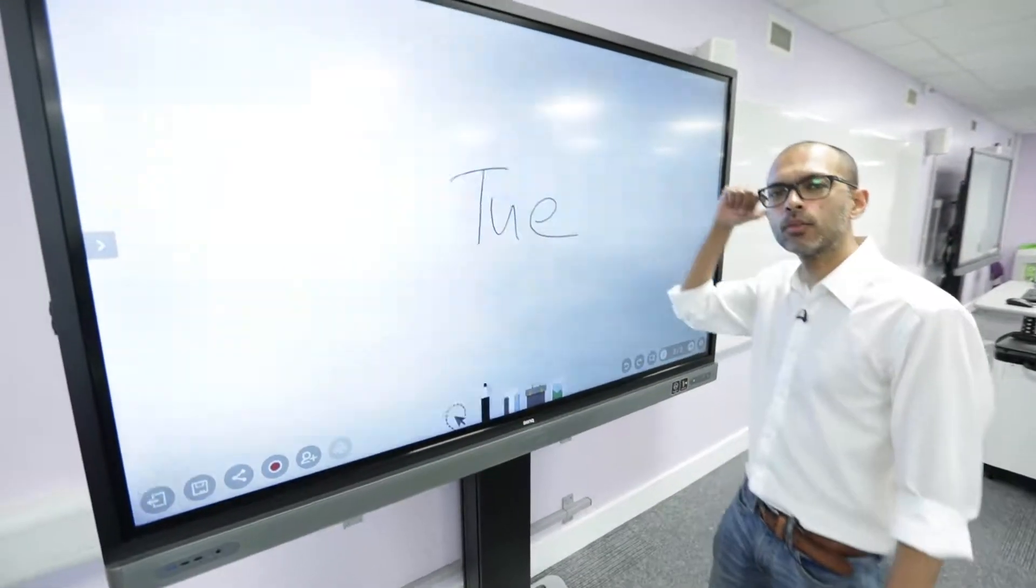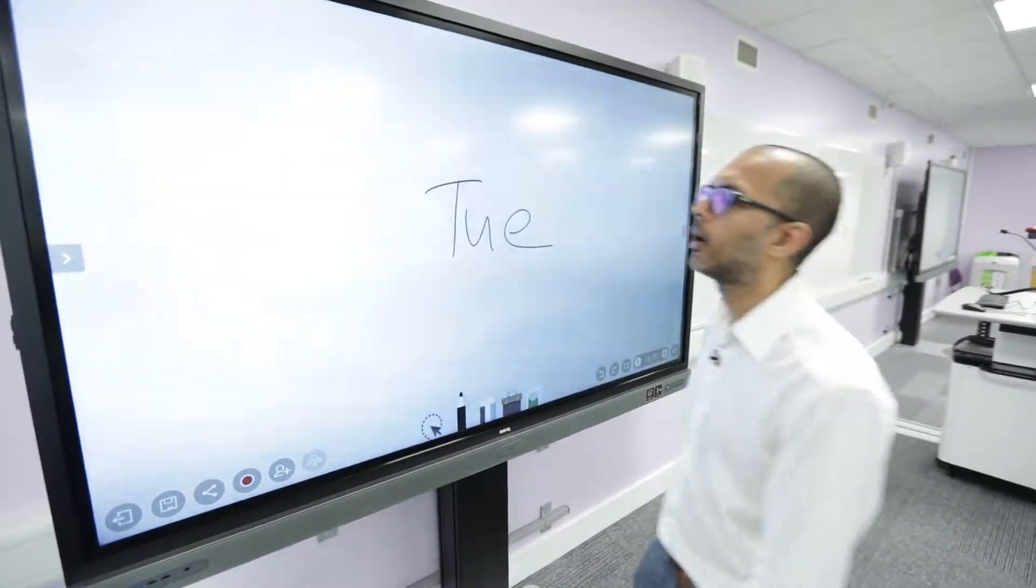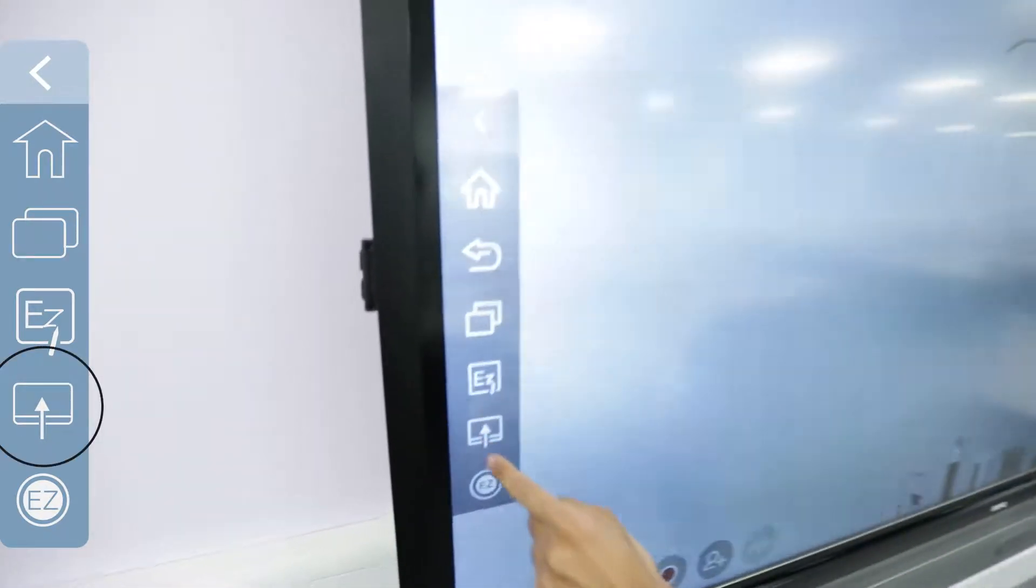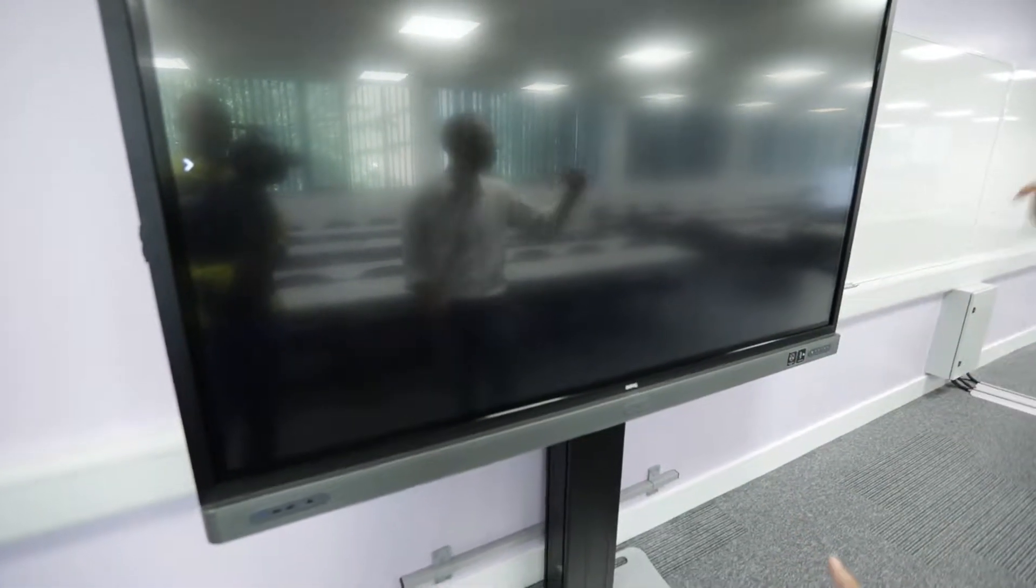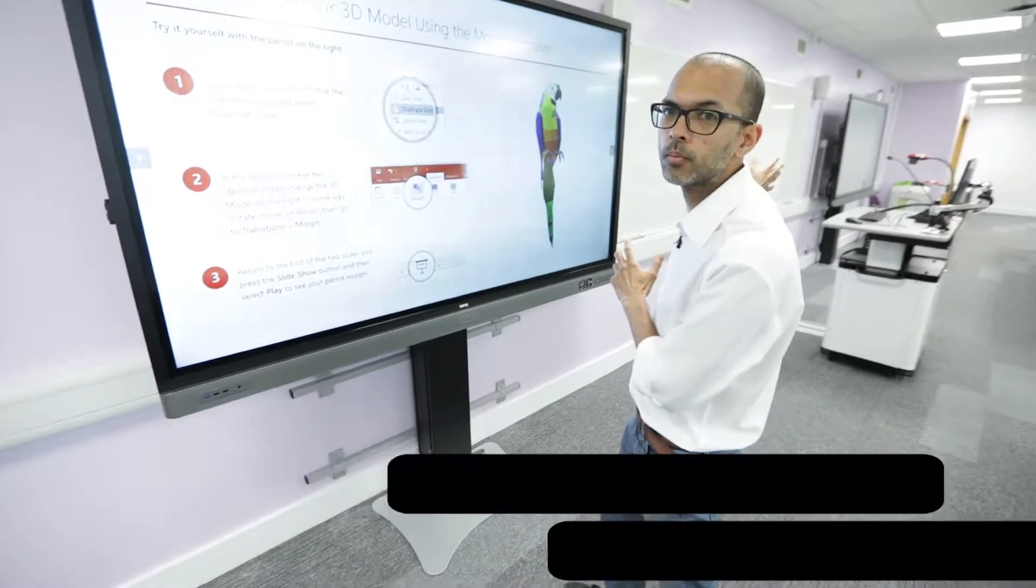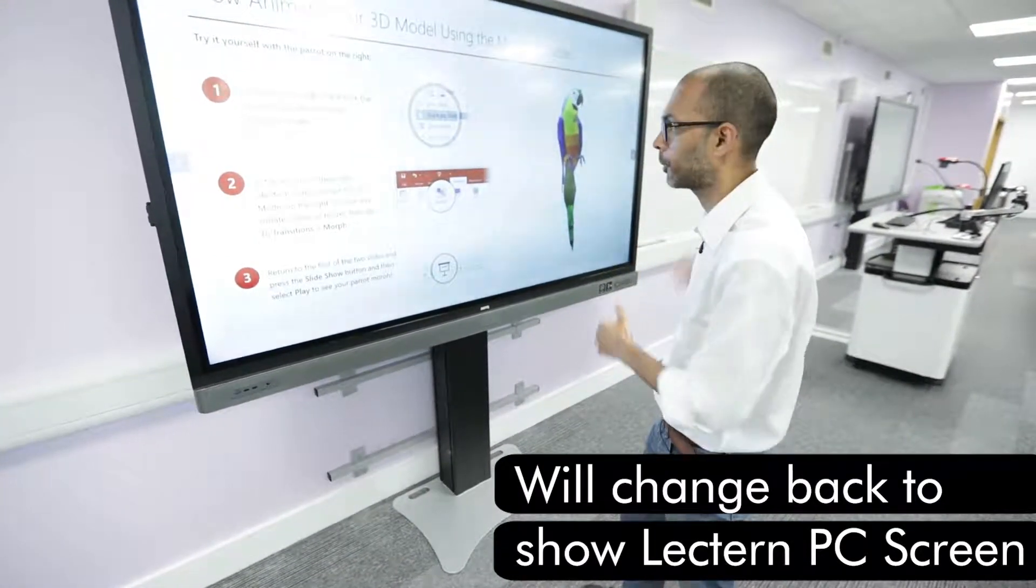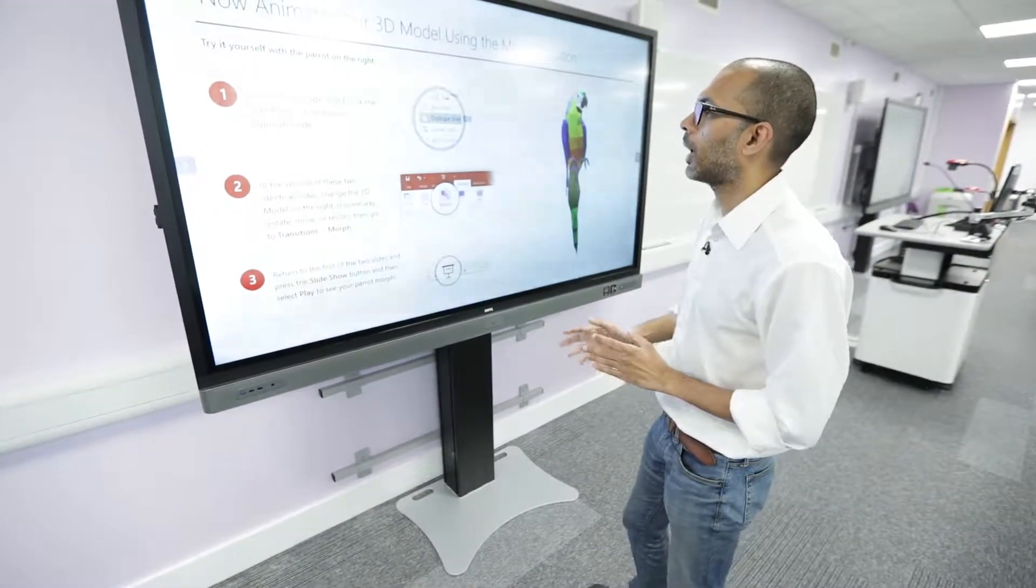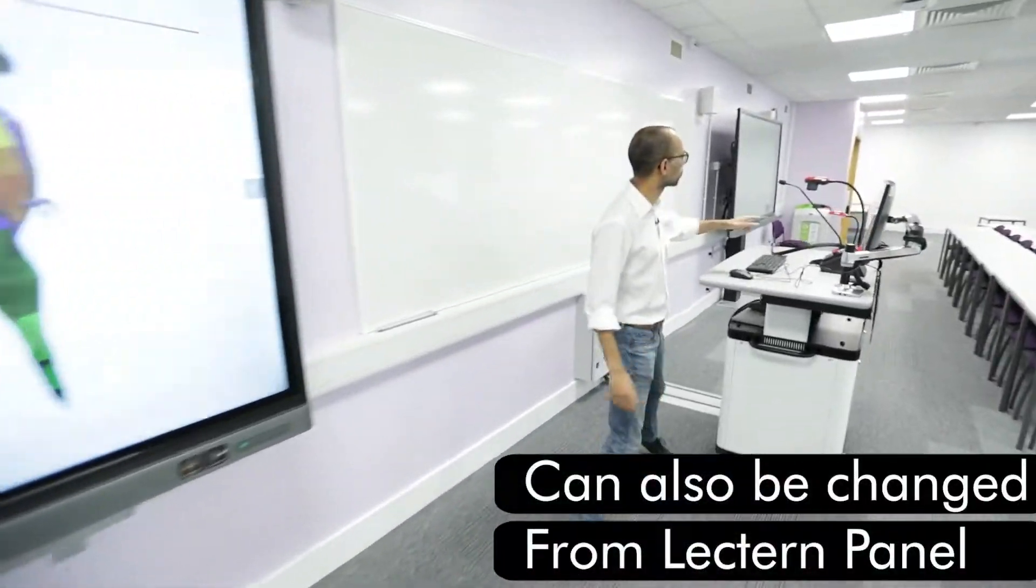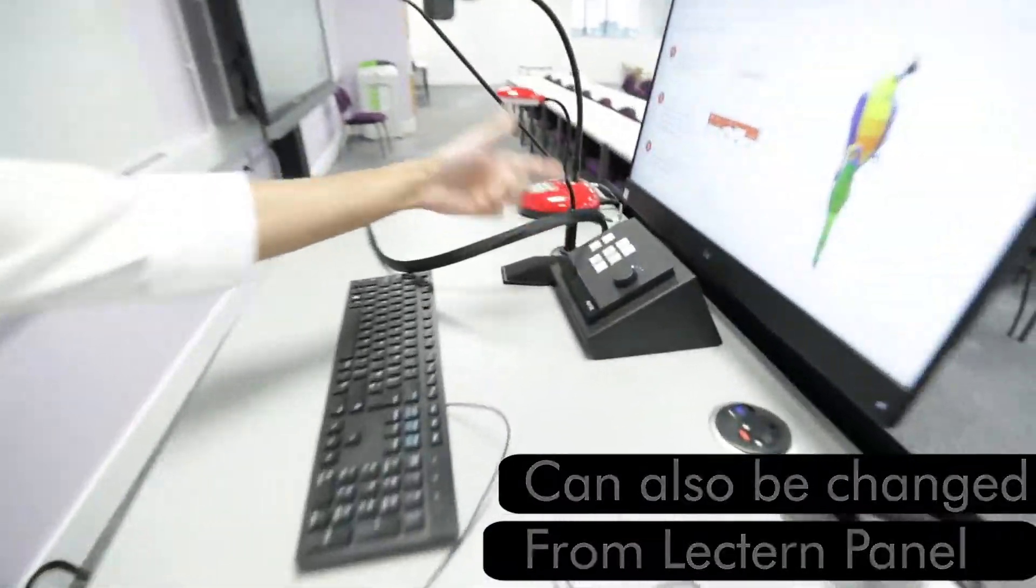To go back to the last display, I just need to click on the tab and select this and select lectern. So that would get me to what was chosen from the lectern, which was the computer. I can also switch back by choosing one of the input sources on the touch panel on the lectern.